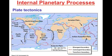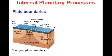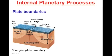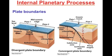A divergent plate boundary is when two plates move apart. When these plates move apart, a ridge of molten rock from the mantle wells up between them. This occurs along the Mid-Atlantic Ridge, which is the most common place that divergent plate boundaries occur.